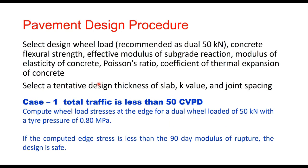The design procedure begins by selecting the design wheel load — generally 50 kN — and determining concrete strength parameters: flexural strength, effective modulus of subgrade reaction, modulus of elasticity, Poisson's ratio (0.15 if unknown), and coefficient of thermal expansion (10 × 10⁻⁶ per °C if unknown). Then select a trial design thickness. There are three cases depending on traffic level.